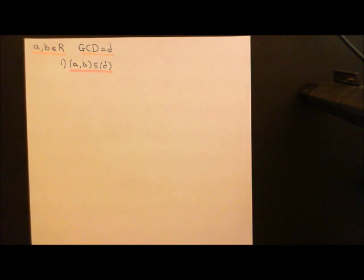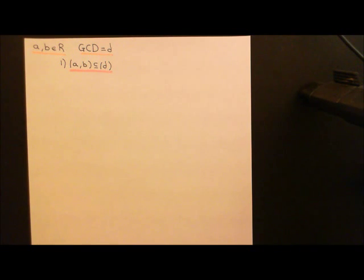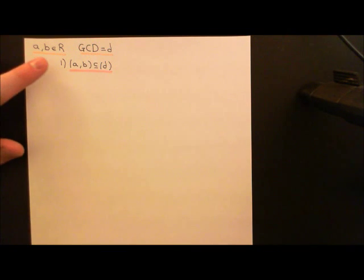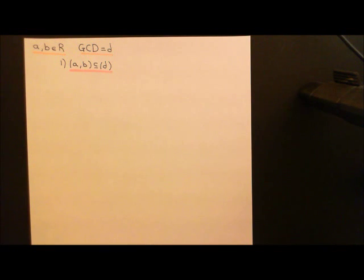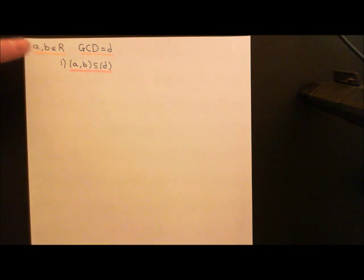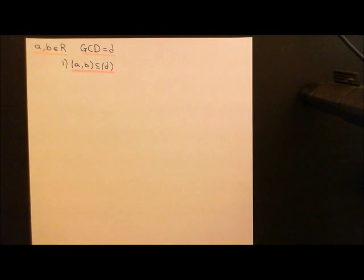Now, where does the 'greatest' bit come from? I found this surprising when I first learned the definition of a greatest common divisor. I assumed that to do this, you'd need some sort of notion of size on your commutative ring — some sort of norm function. But in fact, you don't need that at all. You can do this with an arbitrary commutative ring with no more structure than the algebraic structures already there.